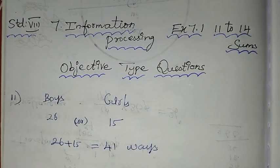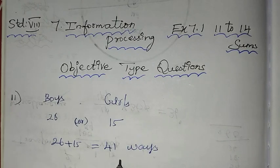When you have 'or', you add the two options. So our answer is 41 ways.